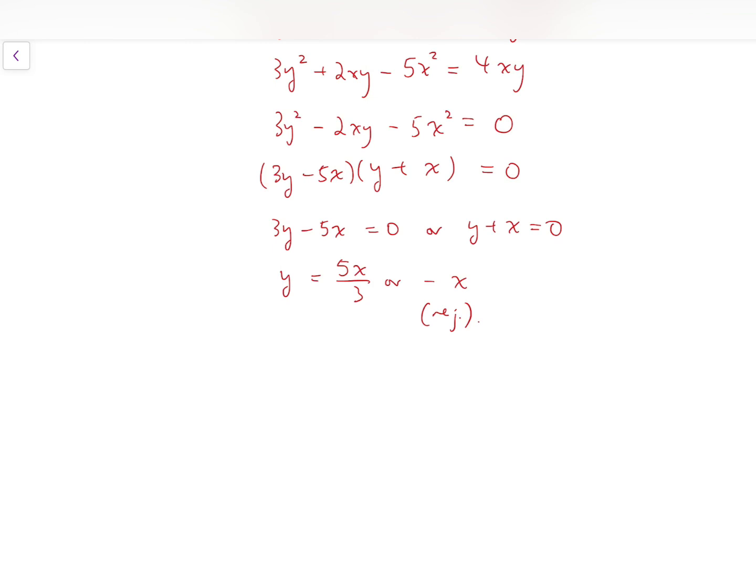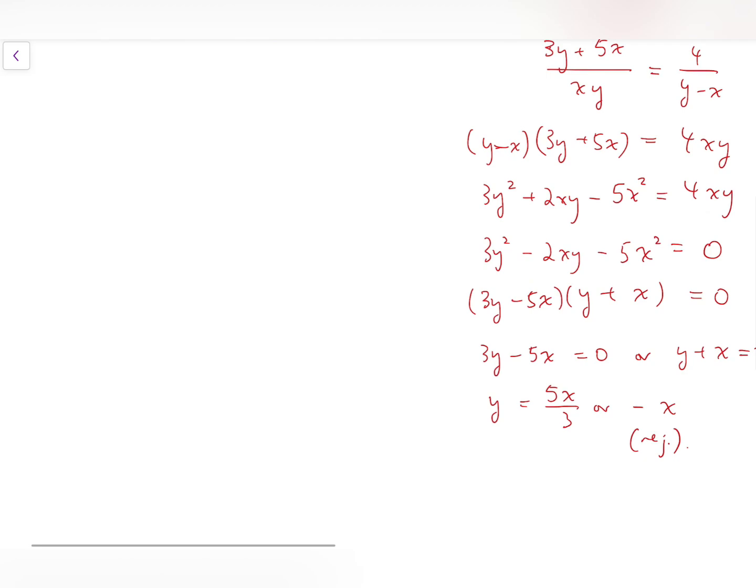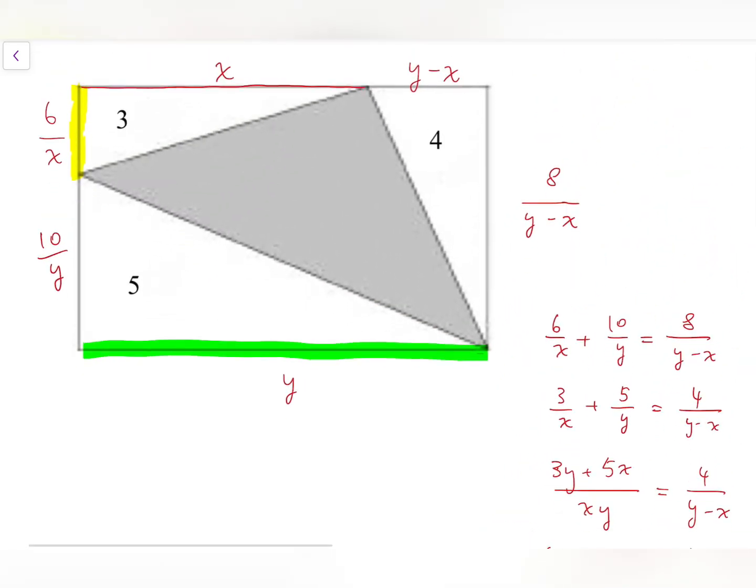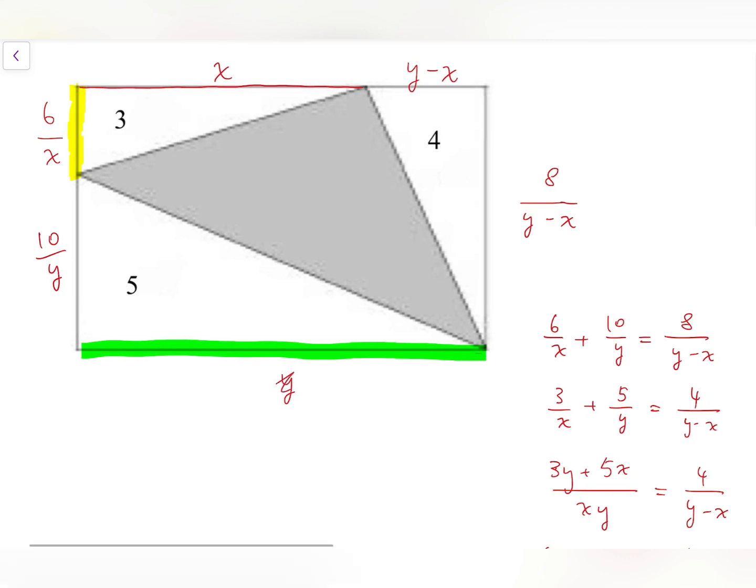And if y is equal to 5x over 3, we can return to the rectangle at the top and rewrite the side lengths. So we have 5x over 3. And for this, we have 2x over 3.